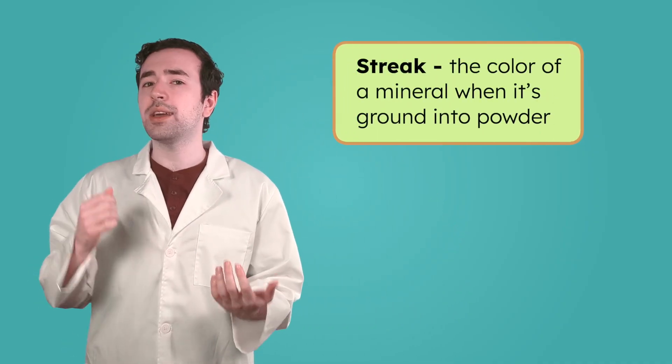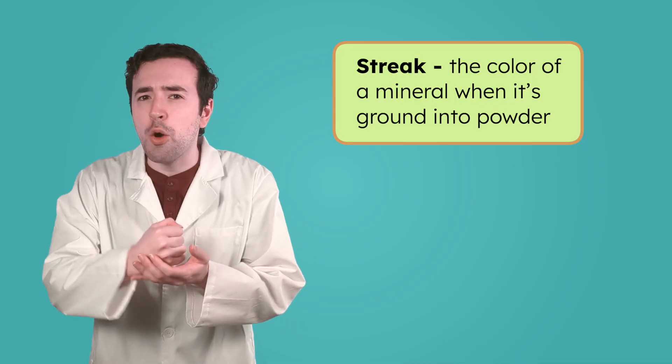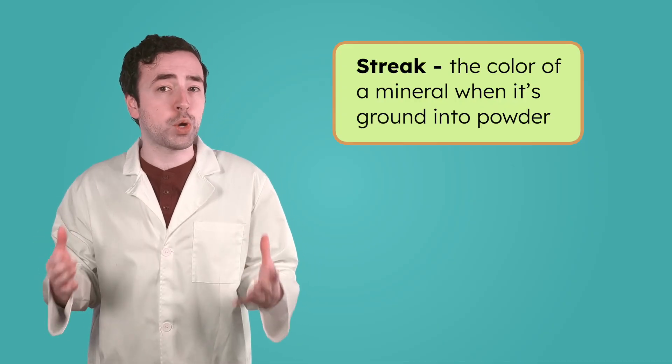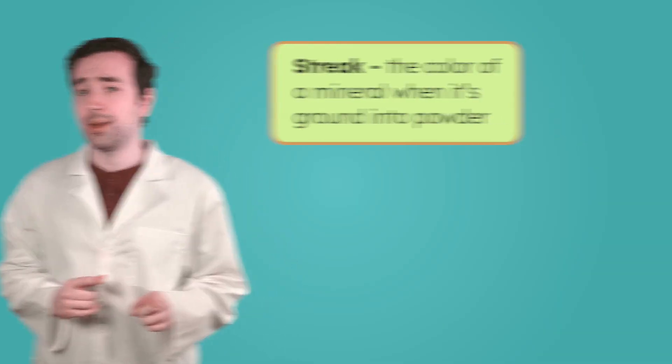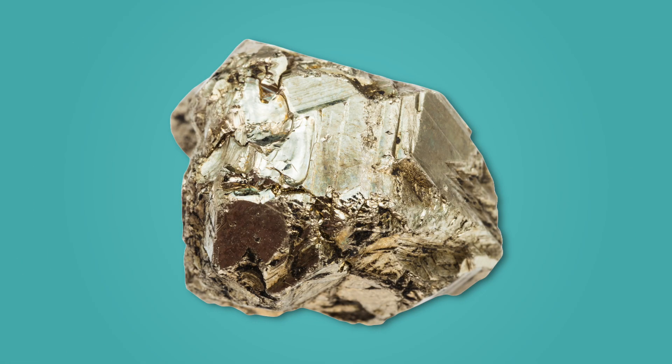Sometimes the luster or shape of a mineral can change how its color looks. Luckily, there's another property we can test: streak. Streak is the color of a mineral when it's ground into powder. It's kind of like a mineral's true color because it doesn't always match what you see on the outside. Take pyrite, or fool's gold, for example — its color and luster makes it look like gold. What color streak do you think pyrite would have?